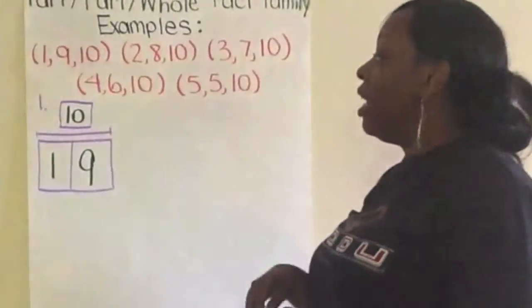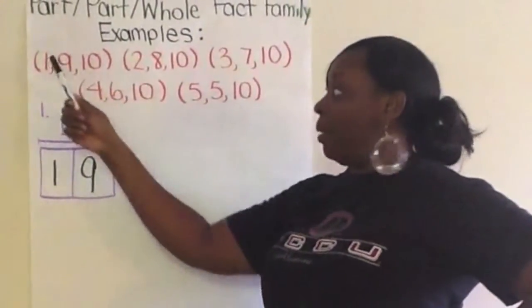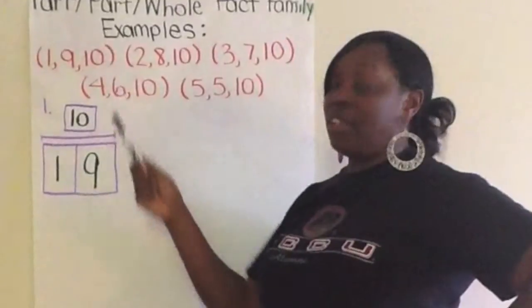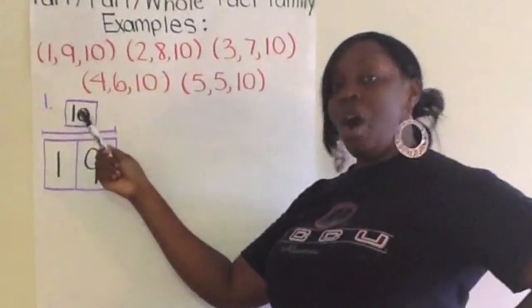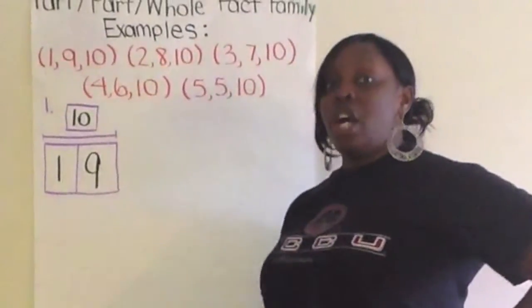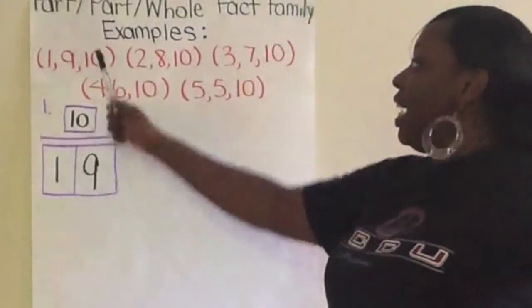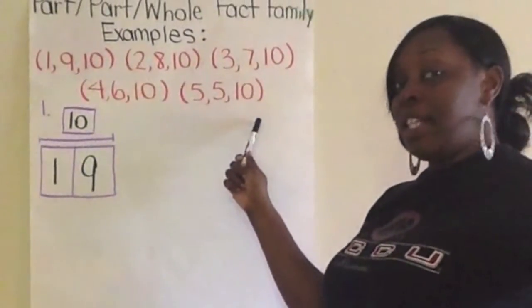For example, this is a part, part, whole map. What you do, you take a problem or the numbers that work together on a fact family, you show the two parts that you're putting together to make the whole or the sum. These are the parts and this is the number we're trying to make. So, if your focus is making 10, each of these number combinations when you put them together are fact families that make 10.